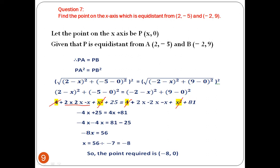On the right side, minus 2 times minus gives plus, so it is 4x + 81. Taking 4x to the left: -4x - 4x = 81 - 25, giving -8x = 56. So x = 56 ÷ (-8) = -7. The required point is (-7, 0).